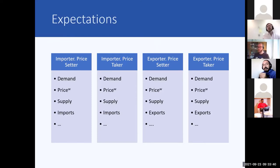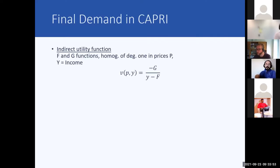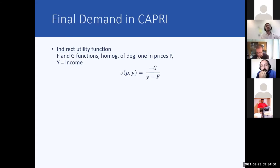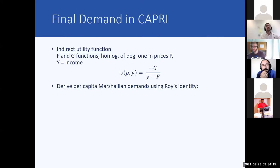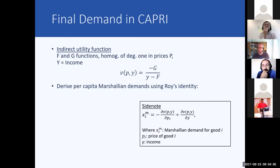Now let's move to the CAPRI world. How is final demand in CAPRI implemented? First, we work with an indirect utility function. We have functions F and G, which are homogeneous of degree one in prices. Y is income, so the utility function depends on prices and income. From that we derive per capita Marshallian demands using Roy's identity.